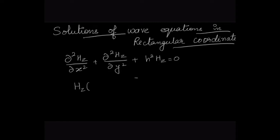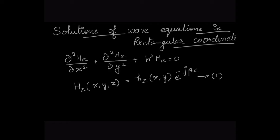Here, the magnetic field, which is a function of xyz coordinates, can be written as magnitude and phase components. So Hz, as a function of xy, multiplied by the phase component e^(−jβz). The magnitude component Hz(x,y) can be written as a product of a function of x only and a function of y only.